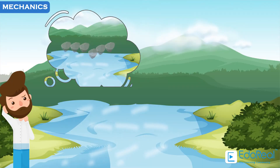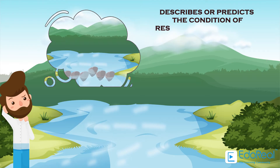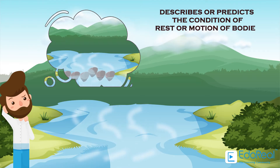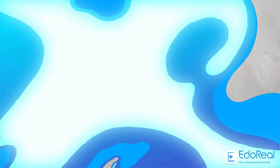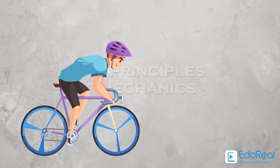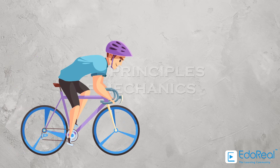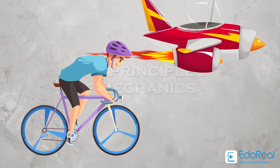Mechanics is the science which describes and predicts the condition of rest or motion of bodies under the action of forces. The principles of mechanics are also applicable to machines — it may be a simple machine such as a bicycle, or a machine as complex as an aircraft.